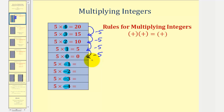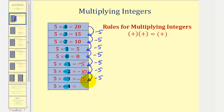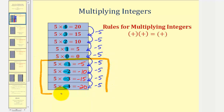Since zero minus five equals negative five, five times negative one equals negative five. And negative five minus five equals negative ten, so five times negative two equals negative ten. Negative fifteen minus five equals negative twenty, and therefore five times negative three equals negative fifteen, and five times negative four equals negative twenty. Focusing on these last four products, we've discovered that a positive times a negative is negative.